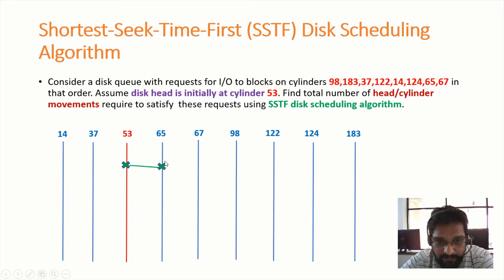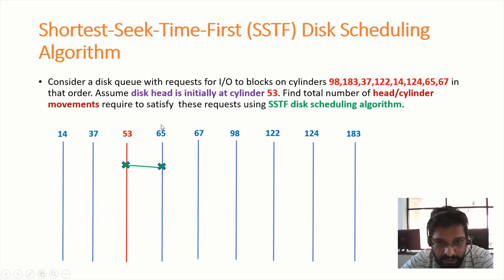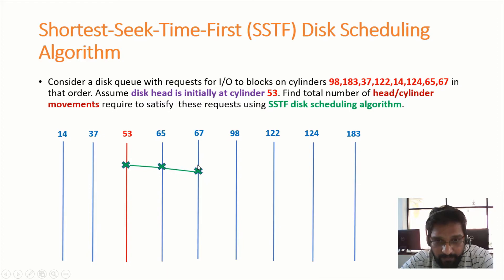From cylinder number 65, I need to check whether cylinder number 37 or cylinder number 67 is nearer with respect to cylinder number 65. Therefore, I need to move the disk head towards cylinder number 67. Now from cylinder number 67, we need to identify whether cylinder number 98 or cylinder number 37 is nearer.